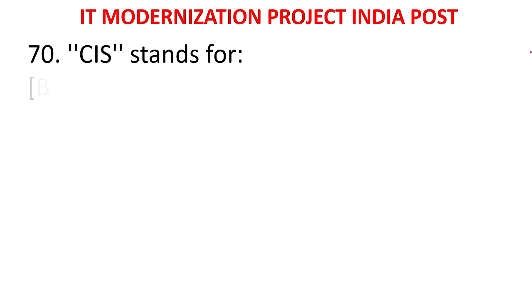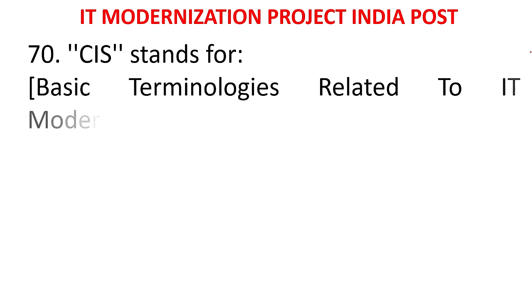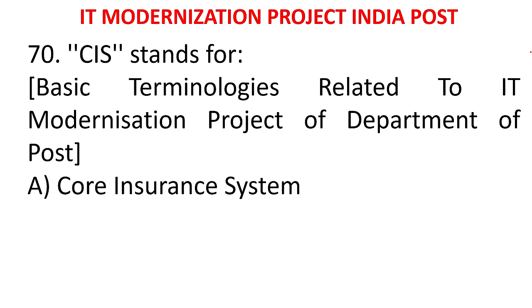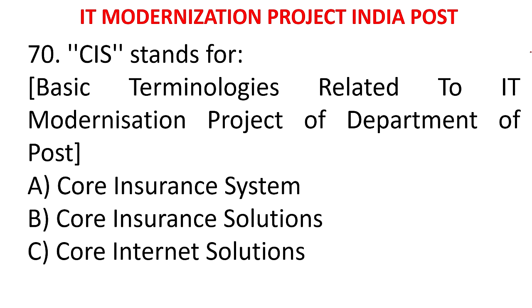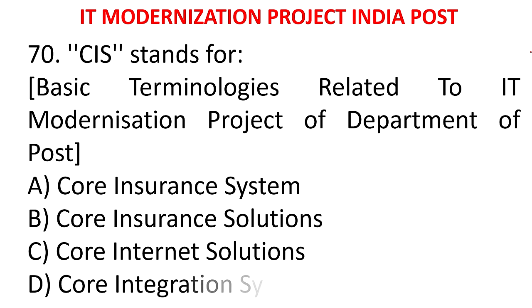MCQ 67: CAS stands for - A) Core Insurance System, B) Core Insurance Solutions, C) Core Internet Solutions, D) Core Integration System. The answer is Core Insurance Solutions. CAS means Core Insurance Solutions.